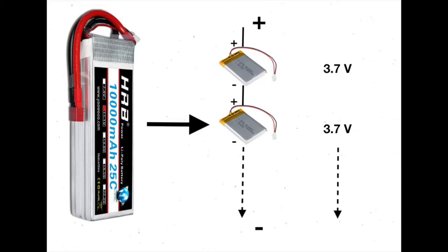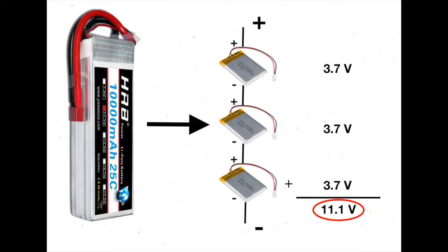LiPo batteries consist of 3.7-volt battery cells wired in series. The number of cells in the battery determines the battery's total voltage. The battery used in this drone has 3 cells, and thus it has a voltage of 11.1 volts.